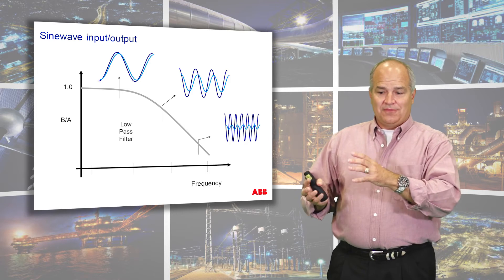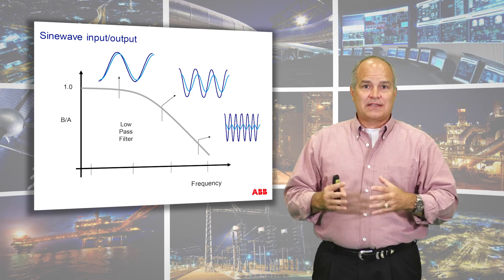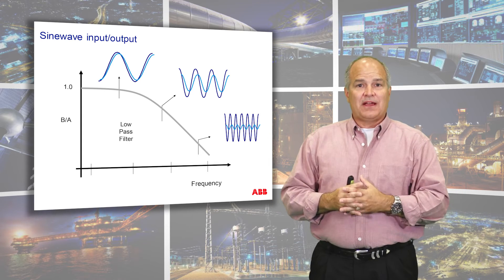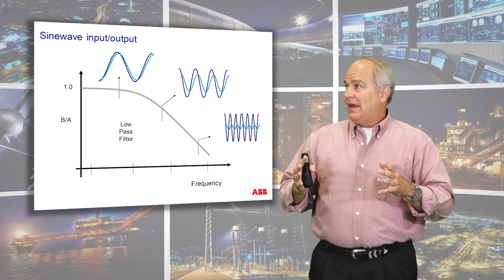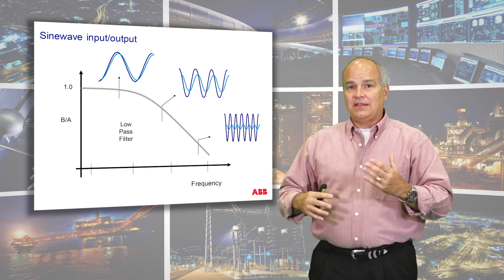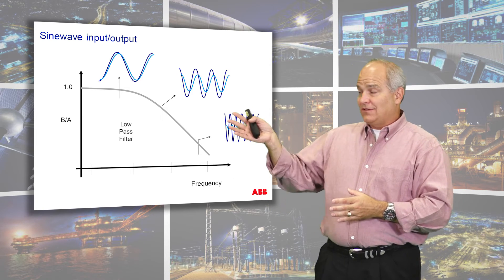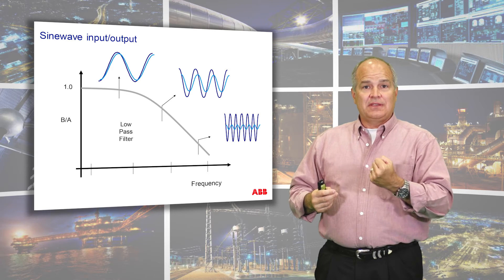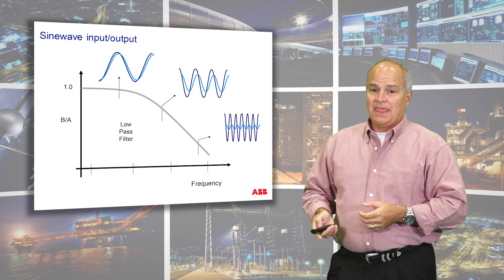I had an example where they were doing a three-level cascade loop and they hadn't separated the loops by enough time. The outer loop would oscillate, then the inner loop, and they just couldn't fix it. It had to do with this: we were driving the inner loops faster than they could physically keep up.